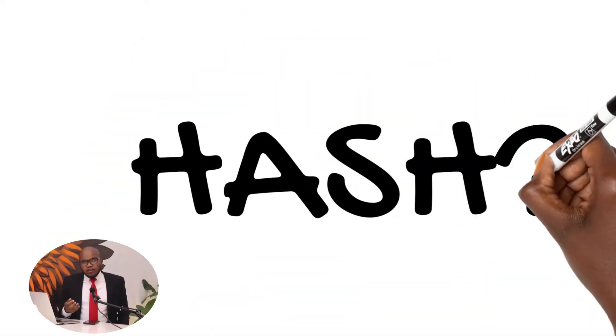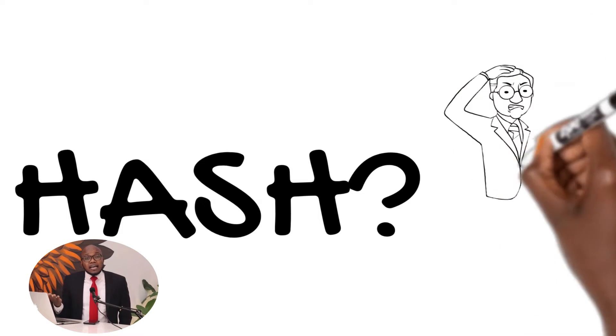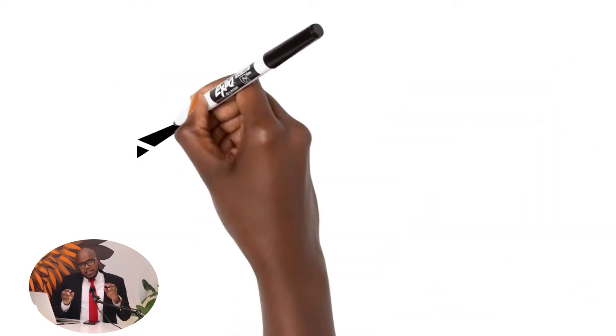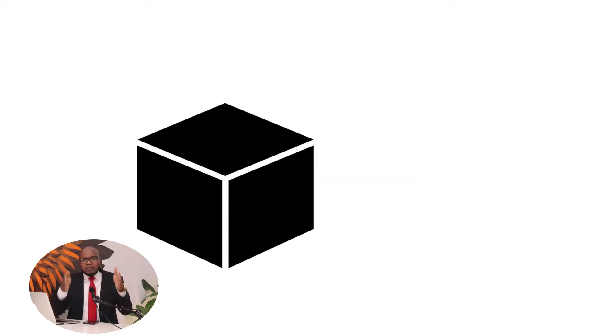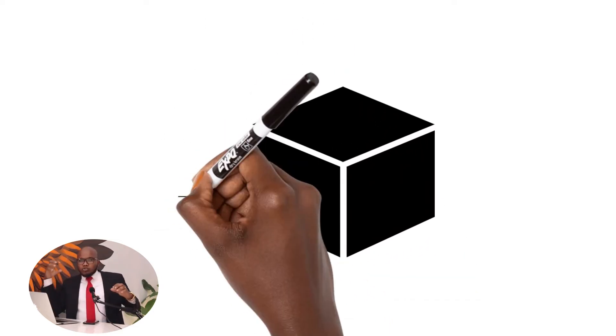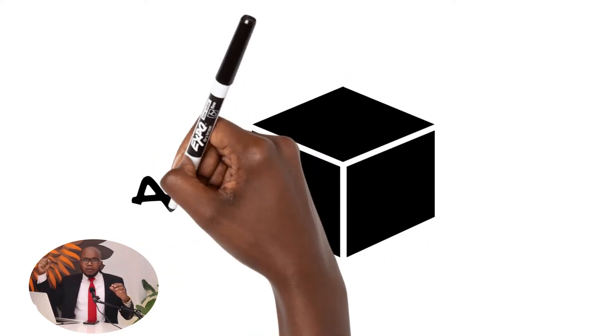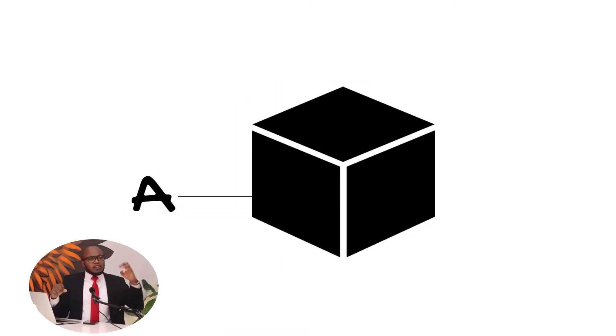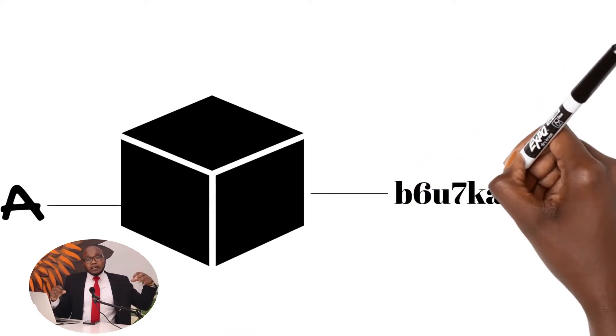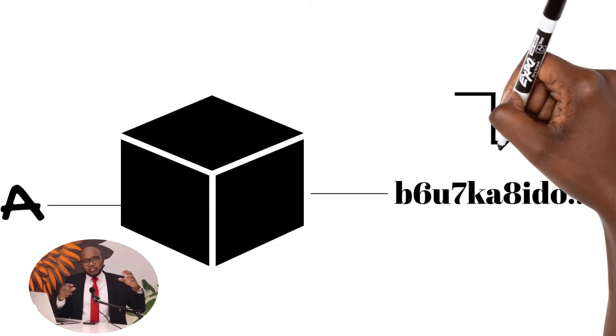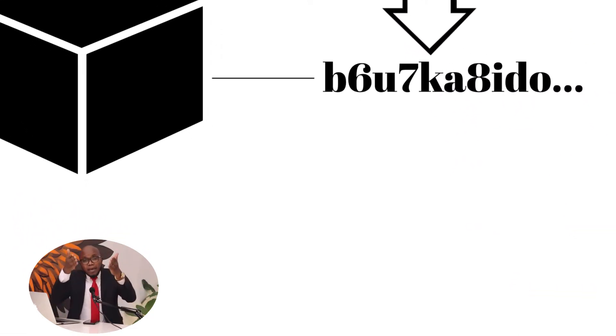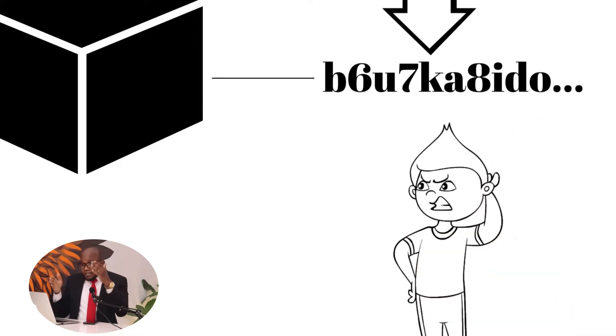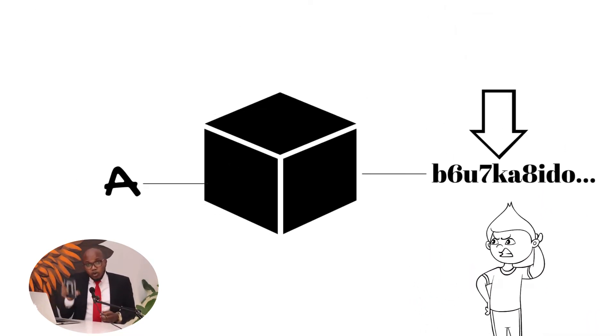This brings us to what we call the hash. You may ask yourself what is the hash, what is the hashing function? In simple terms, a hashing function is a simple mathematical black box that on one end, if you put in information, let's say a letter A, on the other end it is going to spit out a hash.